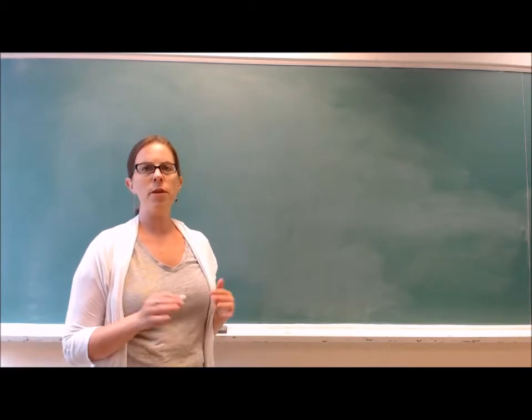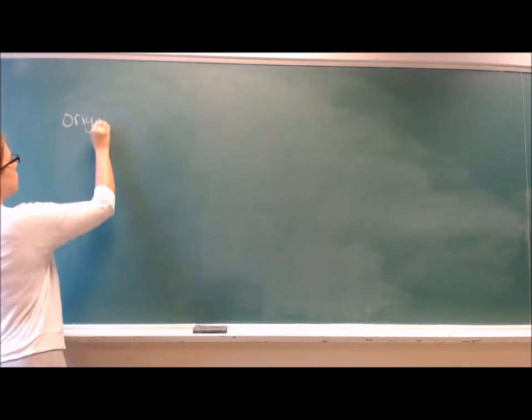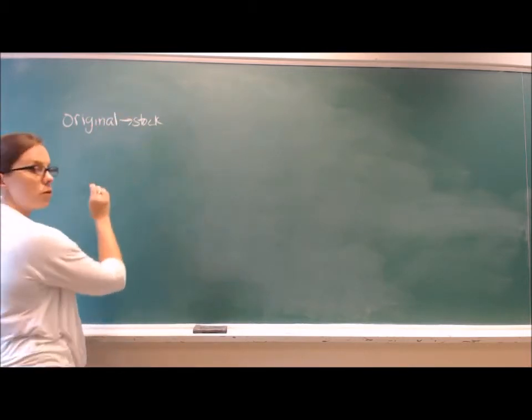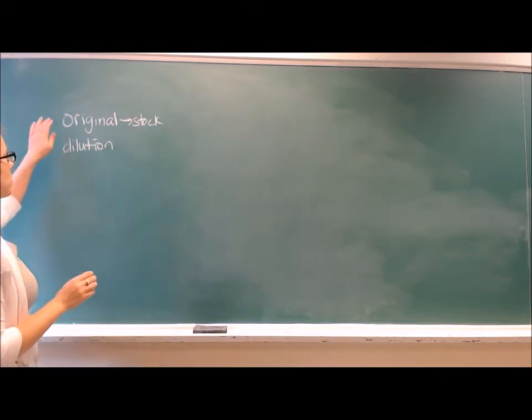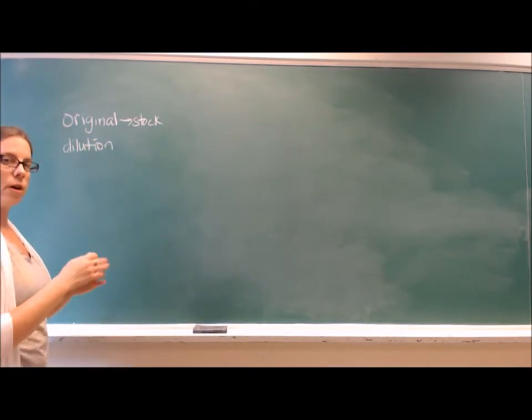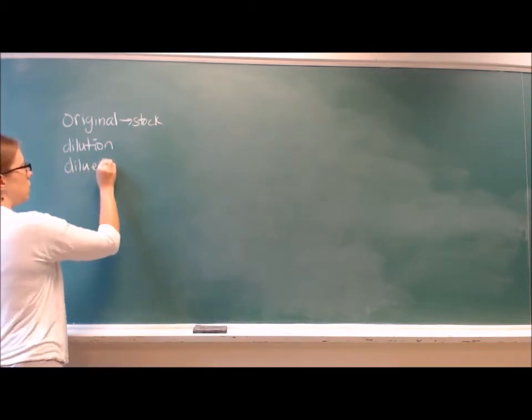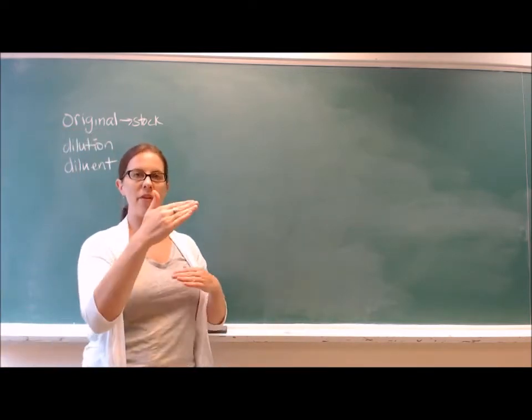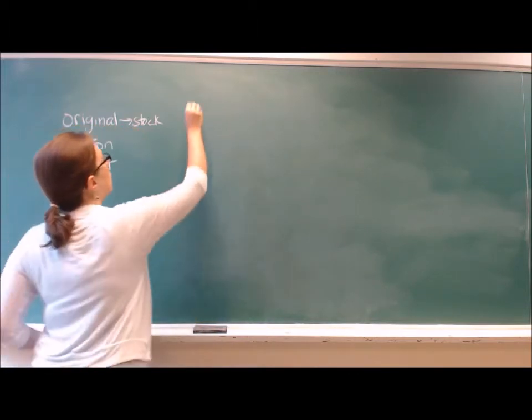First, I want to just go over a few words to make sure we're using the same language. You'll start with an original solution, which we sometimes call the stock solution, and then we want to make a dilution. We'll use some of the stock and put it into a larger volume, and what we make that larger volume up with is called a diluent. This is often times water, but it could be any other liquid that you're diluting the stock solution in.